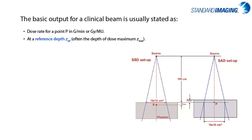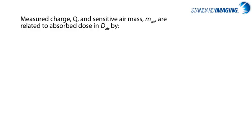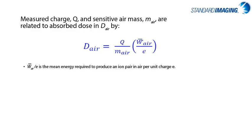Going back to our physics education days, machines are typically calibrated in two setups known as SSD or SAD, with the difference lying in the plane at which the reference field size — typically 10 by 10 centimeters squared — exists, and this is either at the surface or at isocenter, which is normally your depth of D-max. As ionization chambers are typically filled with air, we are actually measuring the dose deposited to the sensitive air mass within the chamber. This dose is determined using the expression shown with a conversion of the charge collected over the mass of air multiplied by the W-bar over E constant. The mass of air in the denominator is important as it is directly related to the collecting volume of the chamber, which goes back to our previous discussion on why having a fully guarded chamber, which wholly defines the collecting volume, is essential for accurate measurements.